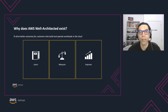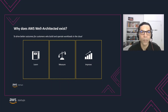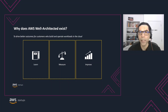AWS Well-Architected helps cloud architects build secure, high-performing, resilient, and efficient infrastructure for their applications and workloads. It is more than a tool. Well-Architected is a mechanism for your cloud journey. It allows you to learn the strategies and best practices for architecting in the cloud, measure your architecture against best practices using the Well-Architected tool, and improve architectures by addressing any high-risk issues identified. As a startup, you want to minimize the risk of one-way decisions early in your design process. It helps you better gauge the state of your architecture and create improvement roadmaps to incorporate into your plans.